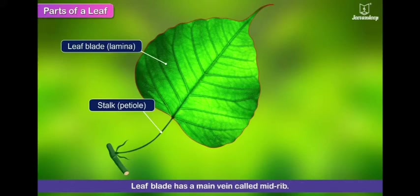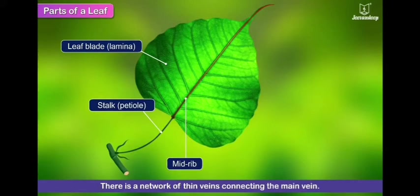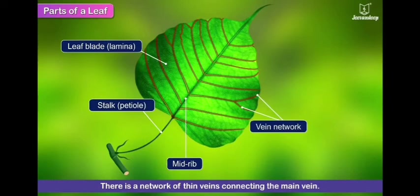And it absorbs the light. Now, there is a vein which supplies water to the leaf or food to other parts of the leaf. And this center vein is called midrib or main vein. And there are network of veins connecting to the main vein.